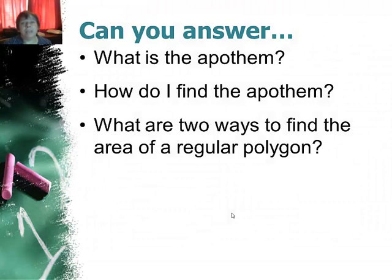What is the apothem? And how do you find it? And what are the two ways to find the area of a regular polygon? Just a hint, one of the ways we use triangles and then the other way we use a general formula which comes from triangles.